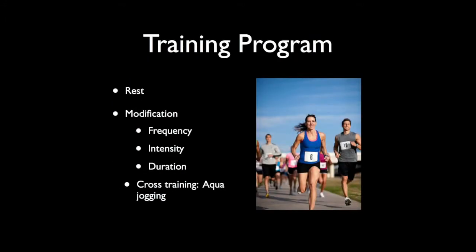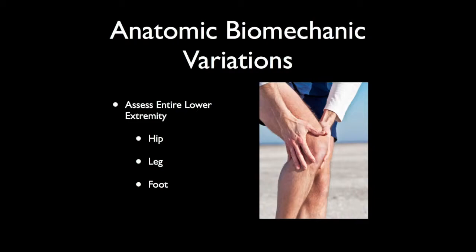I don't like to tell a runner they have to rest — nobody wants to hear that — but I'll get them to decrease their running, change the frequency, intensity, or duration. We might try some cross training such as aqua jogging, which keeps the respiratory system going and muscle strength while decreasing load. Whenever I see a runner with knee pain, the first place I look is not the knee but the hip, then the foot, then the knee — because you have to look at the whole lower extremity to make sure there isn't some anatomic change resulting in this knee pain.